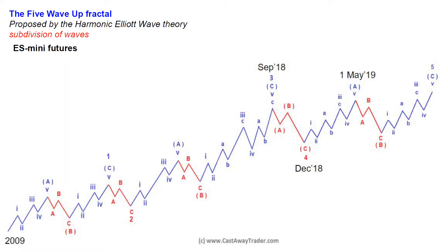I always start with a big picture because understanding the big picture creates directional bias for you. If you understand that the market is moving up, it helps you to trade in the direction of the trend. If you understand that the market is in a correctional mode, you will become more cautious about buying dips and will be looking for setups to short the market.